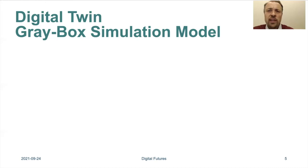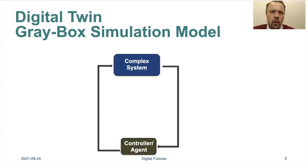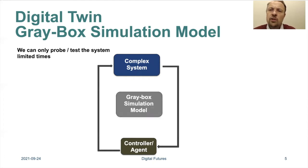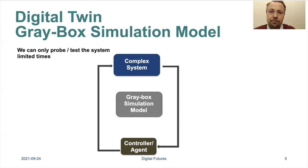The approach we take involves this complex system that we want to control using some reinforcement learning technique, but we can only probe it a limited number of times. The key idea is to create a so-called gray box model, where we learn from data but also encode a priori information into the model. This model can also be called a digital twin — a replica of the real system.